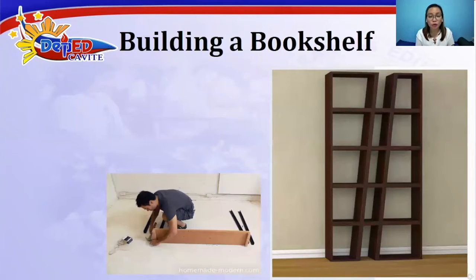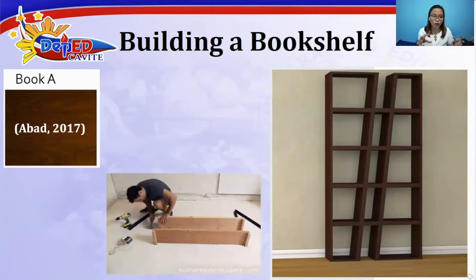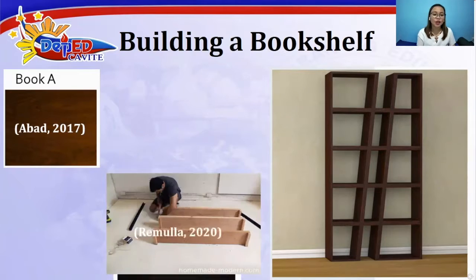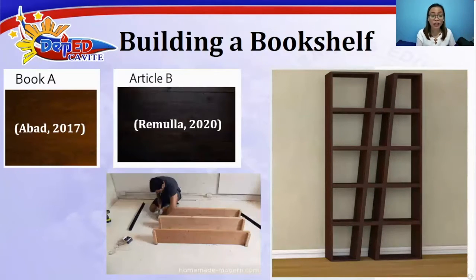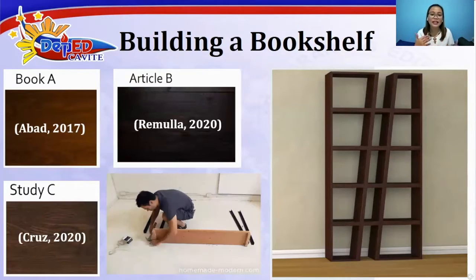It is like building a bookshelf. For example, you will use Book A as a source and cite that according to Abad, 2017, he states that. Then you use another source such as Article B — Bemulia said that — and Study C written by Cruz, so you can say Cruz 2020 said that. So that is like building a bookshelf — you combine the different sources that you have gathered.